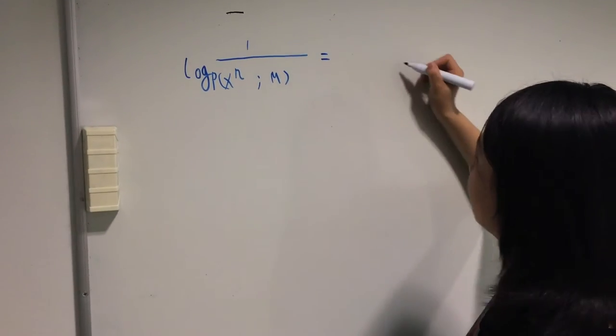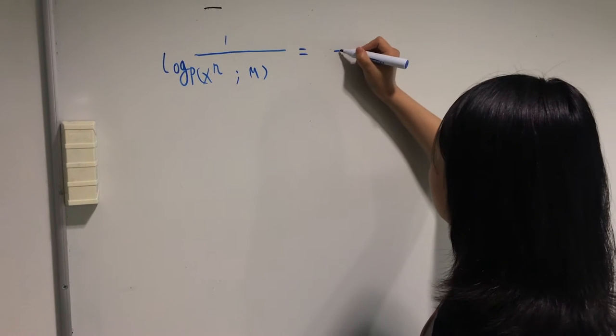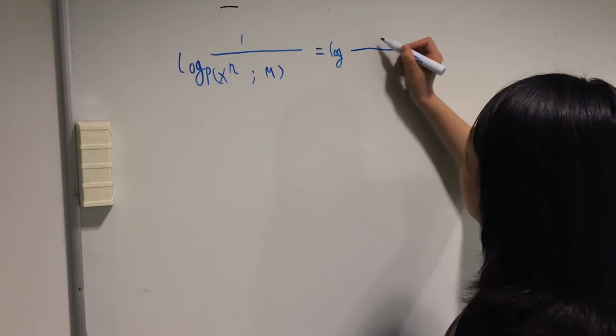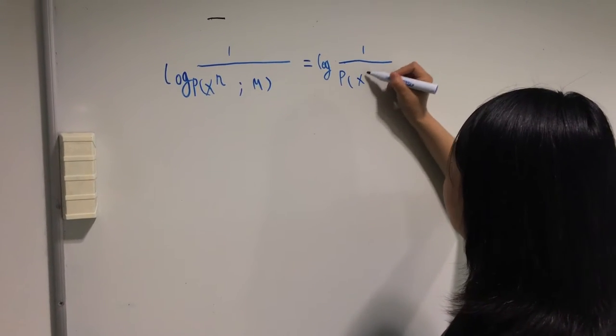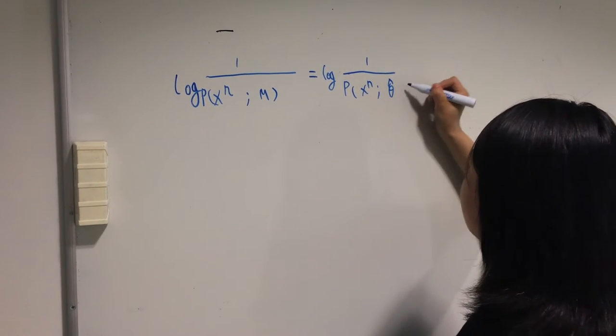By Laplace expansion, the log marginal likelihood can be decomposed as a sum of log of maximum likelihood.